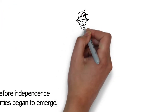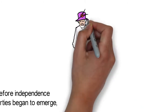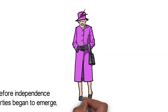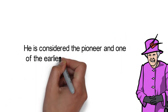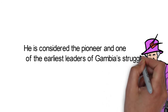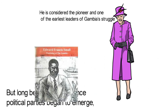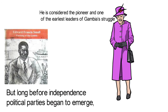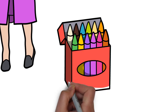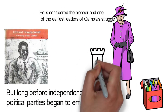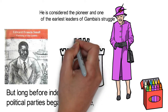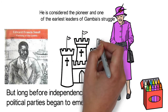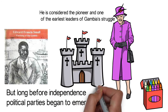Edward Francis Small, a Gambian, had begun to take baby steps towards the liberation of the Gambia from British rule. He is considered the pioneer and one of the earliest leaders of Gambia's struggle for independence from the British. Edward Francis Small was born in Bathurst in January 1891. After finishing his education in Freetown at the Methodist High School, he gained employment at the post office. He then went on to become a teacher and eventually a clergyman with the Methodist mission in 1915.